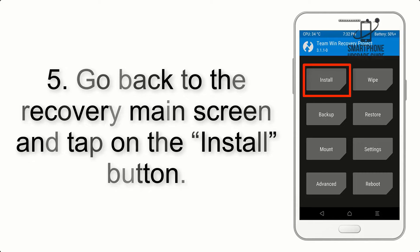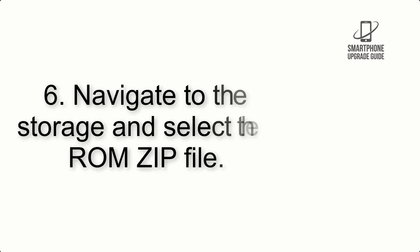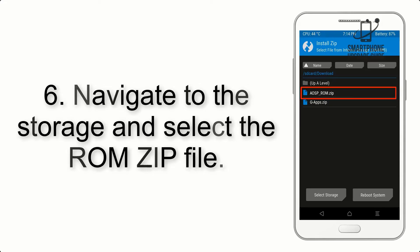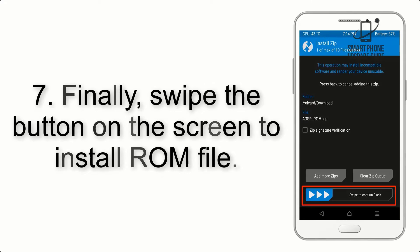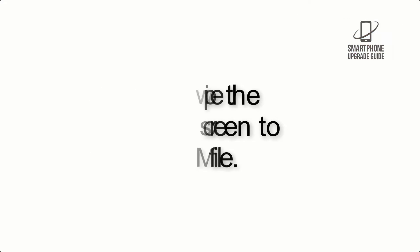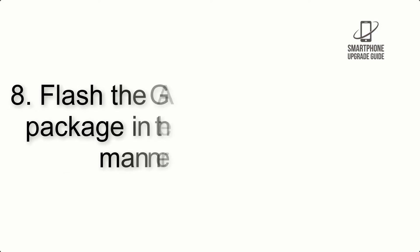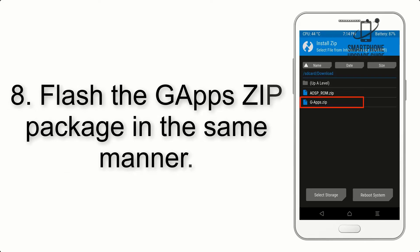Step 5: Go back to the recovery main screen and tap on the Install button. Step 6: Navigate to the storage and select the ROM zip file. Step 7: Finally, swipe the button on the screen to install the ROM file.